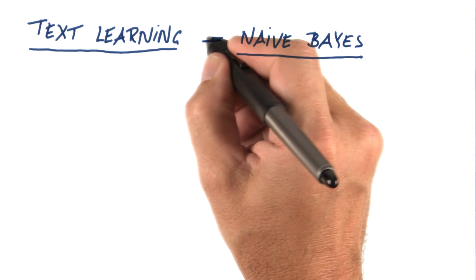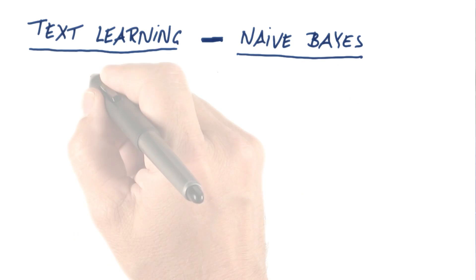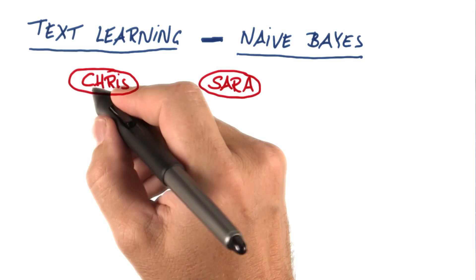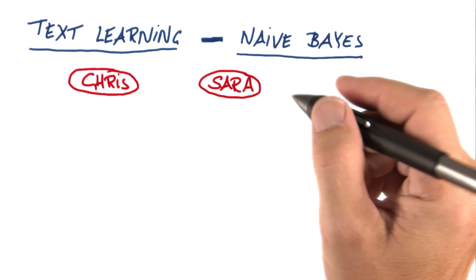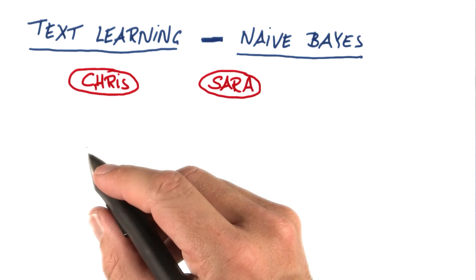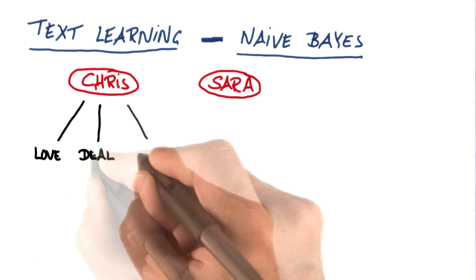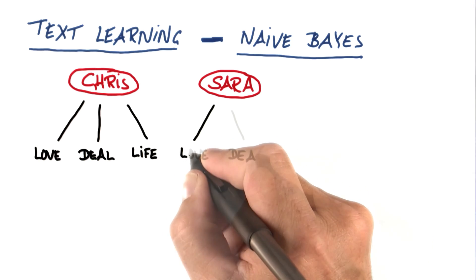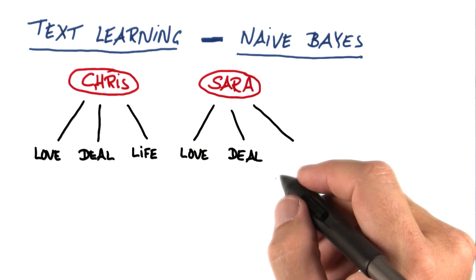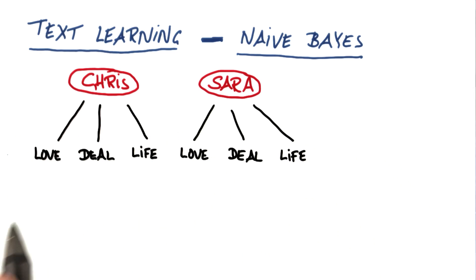You're going to exercise this later in our practice exams using Enron email data sets. So we have two people: one is called Chris and one is called Sarah. Both people write a lot of email. For simplicity, I assume that these emails only contain three words: the word love, the word deal, and the word life. The difference between these two people, Chris and Sarah, is in the frequency at which they use those words.